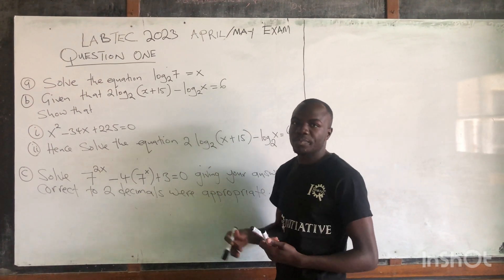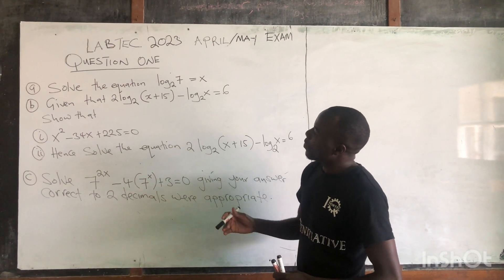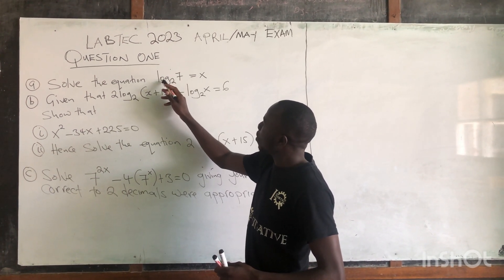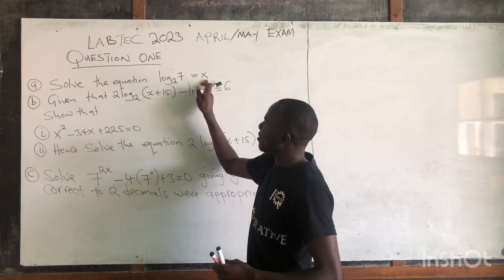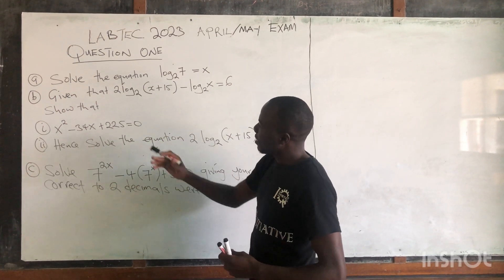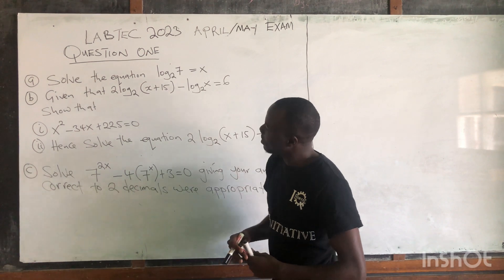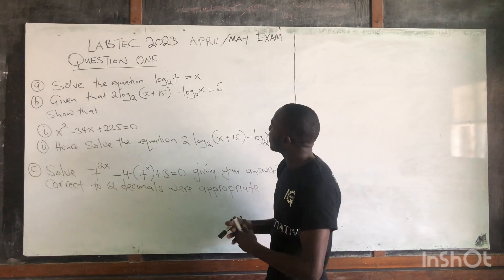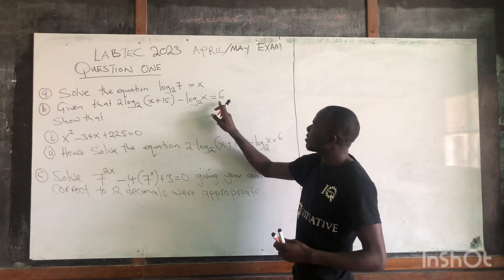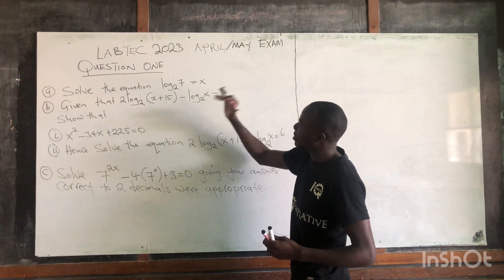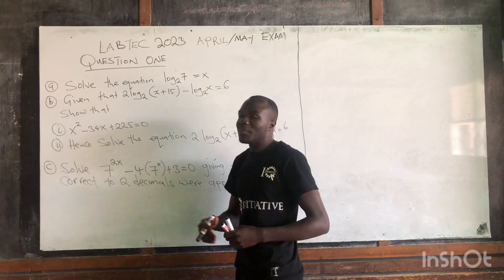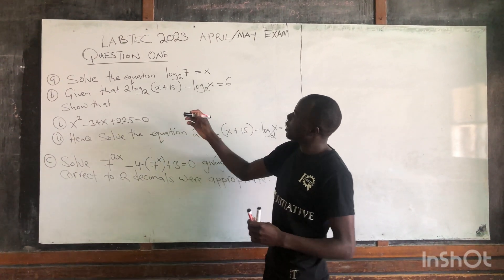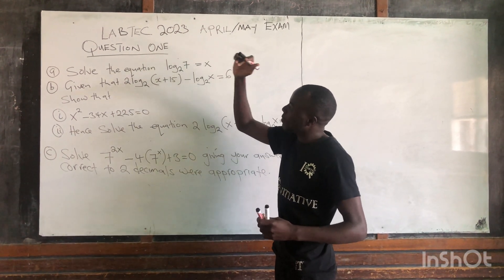We will start with question 1. Question 1A: solve the equation log 7 to the base of 2, equal to x. So we are going to solve this one.